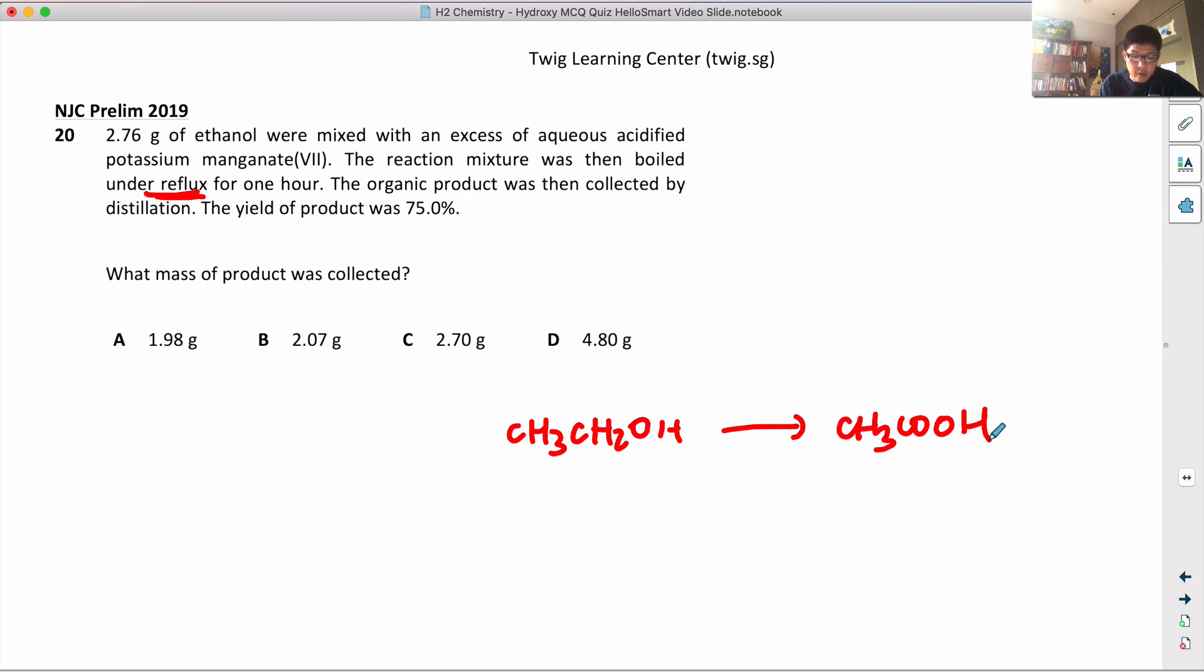The organic product was then collected with a yield of 75%. What is the mass of the product collected? The number of moles of alcohol is equal to 2.76 divided by 46, which gives you 0.06.